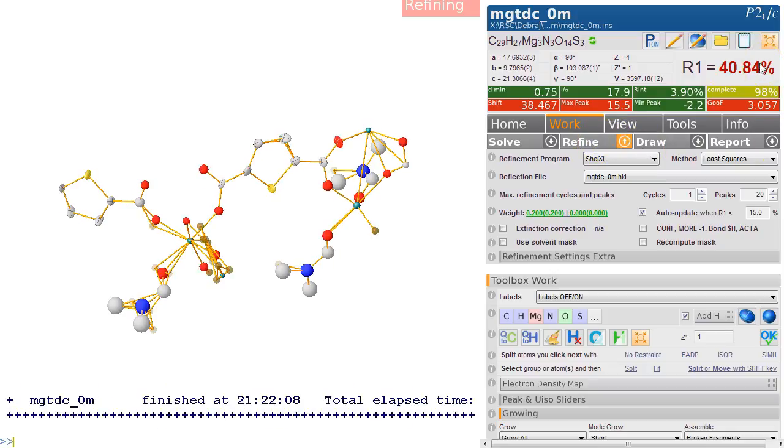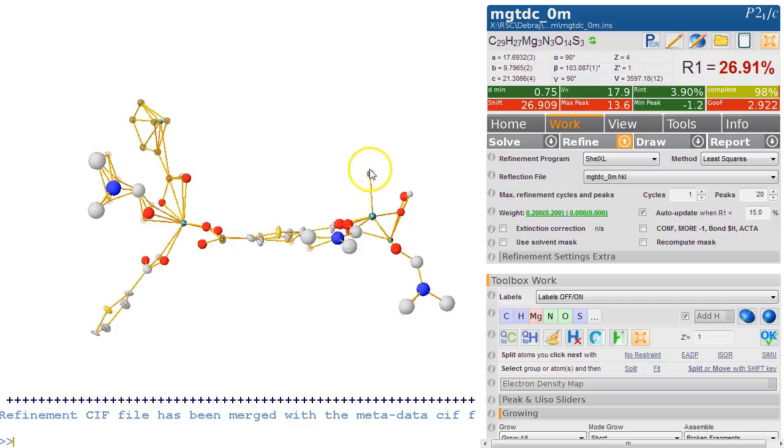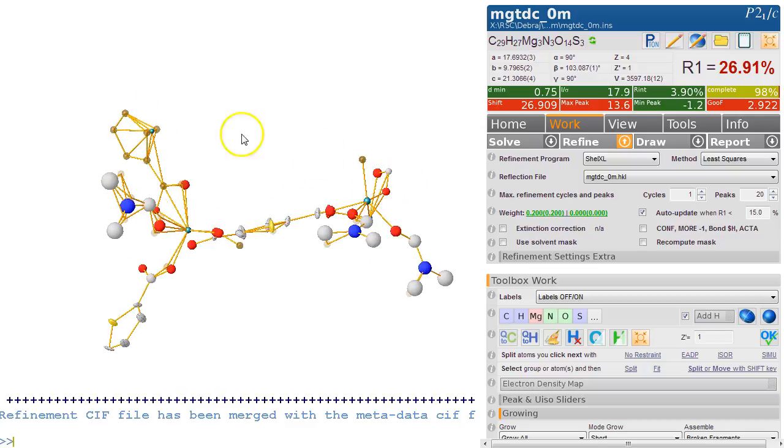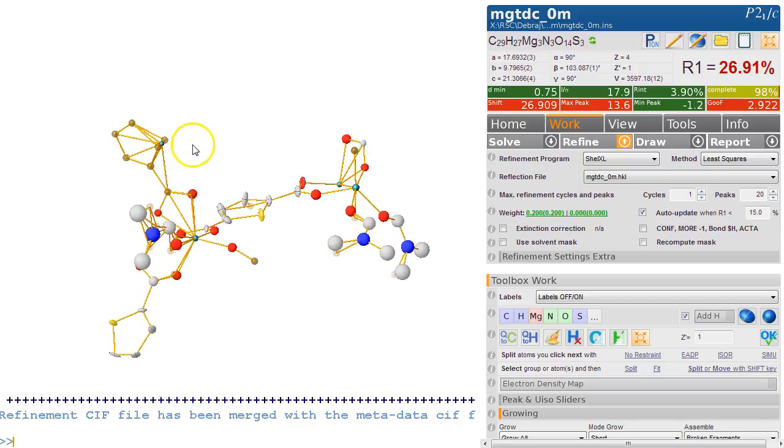We refine it. The R-factor is 40%, so that's very, very high. Something isn't right at all here. That atom there—you can clearly see the five-membered ring here, and that is not a magnesium. This is another one of those sulfur things. We select this magnesium here and make it a sulfur, then select all the other ones in that ring as carbon and refine this.